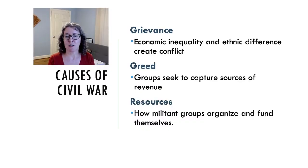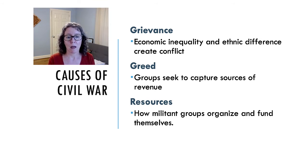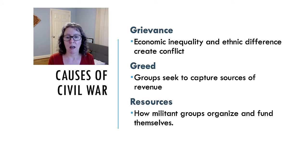There are three general types of theories on the origins of civil war: grievance, greed, and resources. Grievance-based theories focus on economic inequality and ethnic difference as sources of conflict. Greed-based theories focus on the desire by groups to capture sources of revenue. And resource-based theories focus on militant groups' ability to organize and fund themselves. This video describes these theories in more detail and provides context on how to evaluate them.